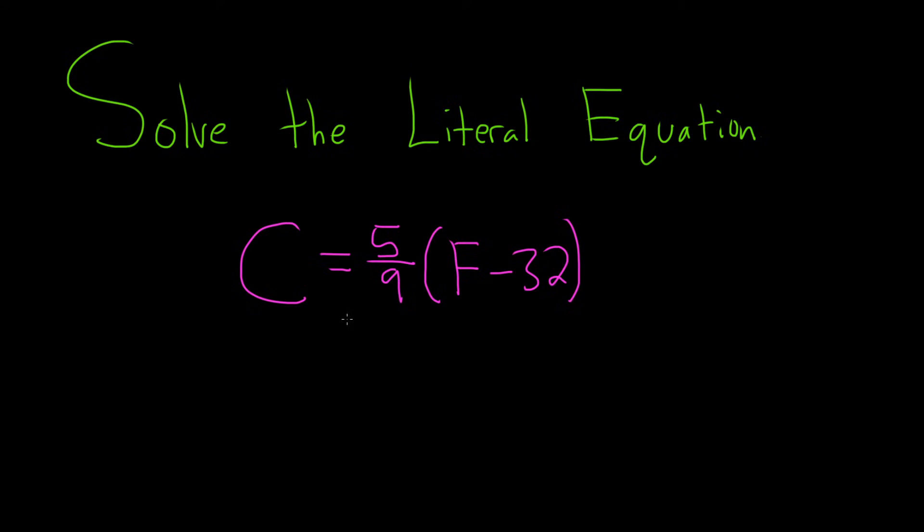Solve the literal equation. So we have C equals 5 ninths times F minus 32. This is actually a formula where you can actually plug in the temperature in Fahrenheit, that's your F, and it actually gives you the temperature in Celsius.